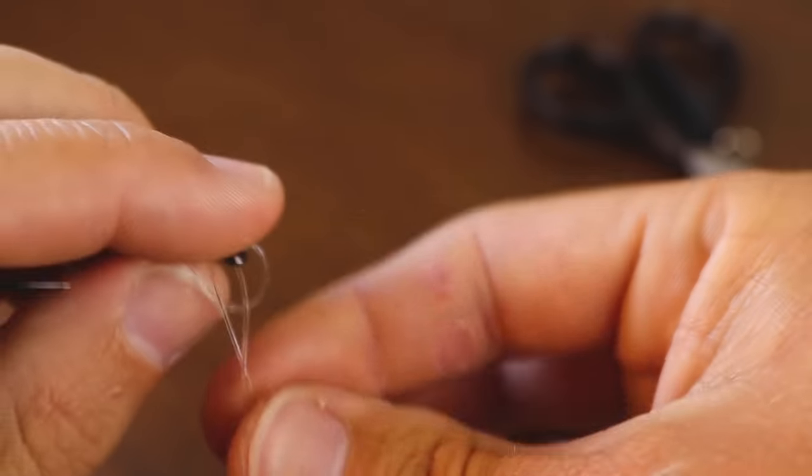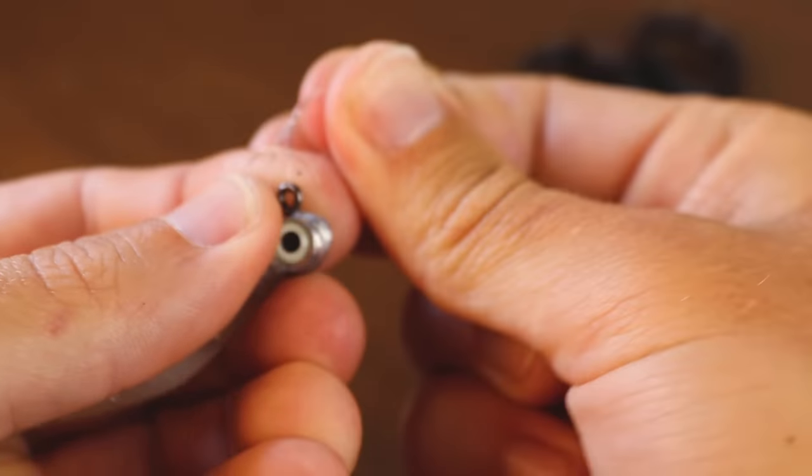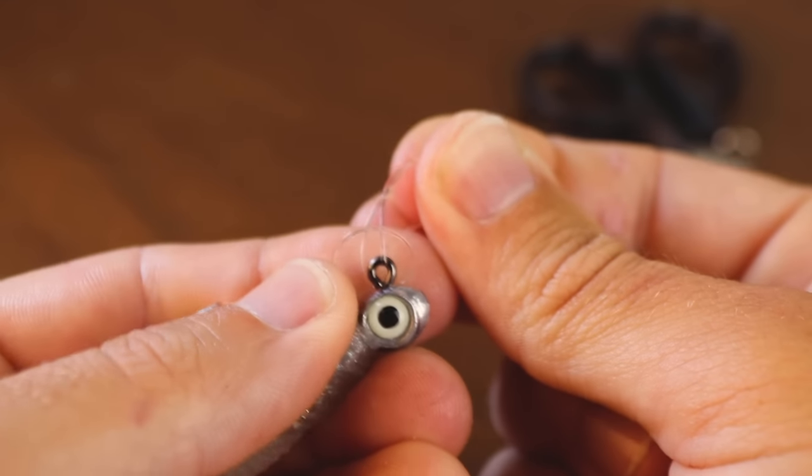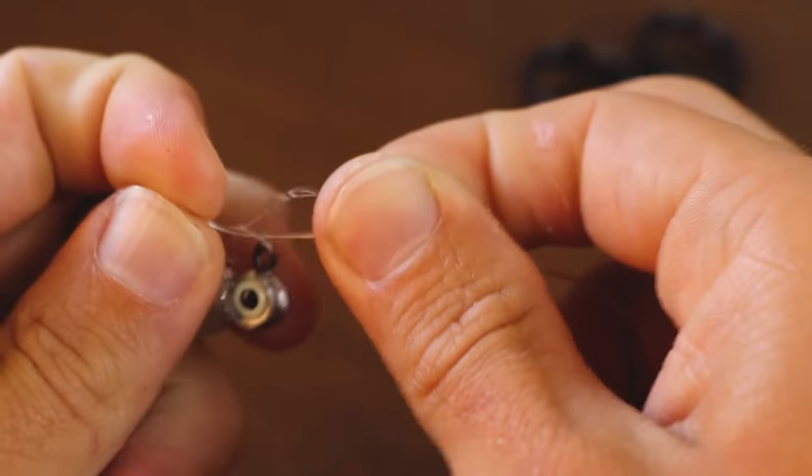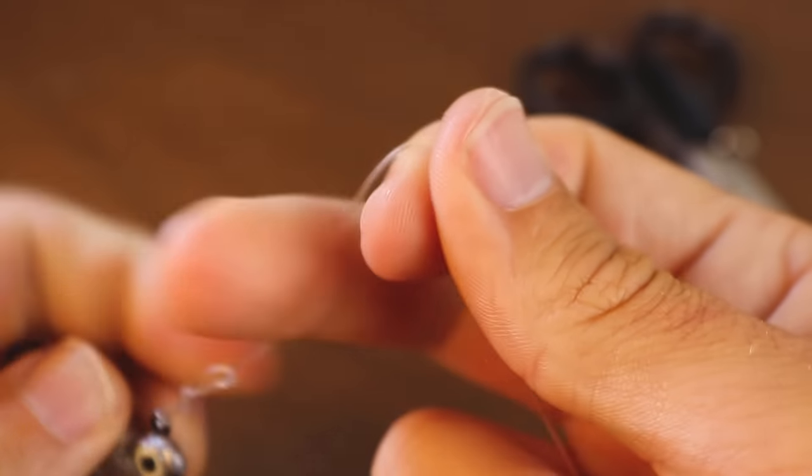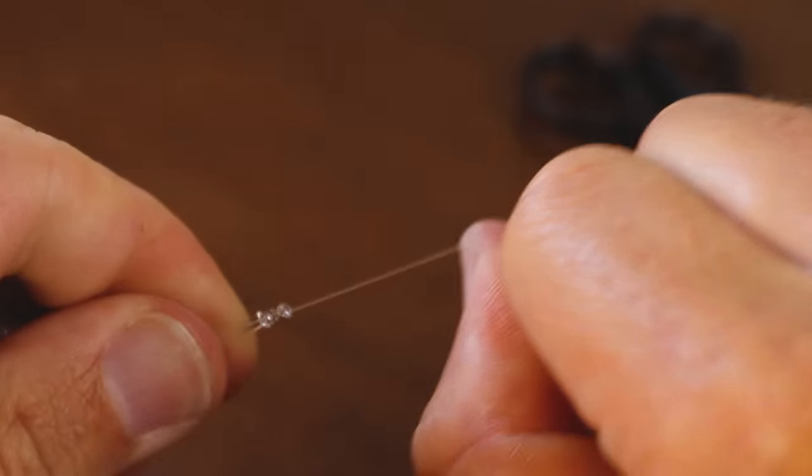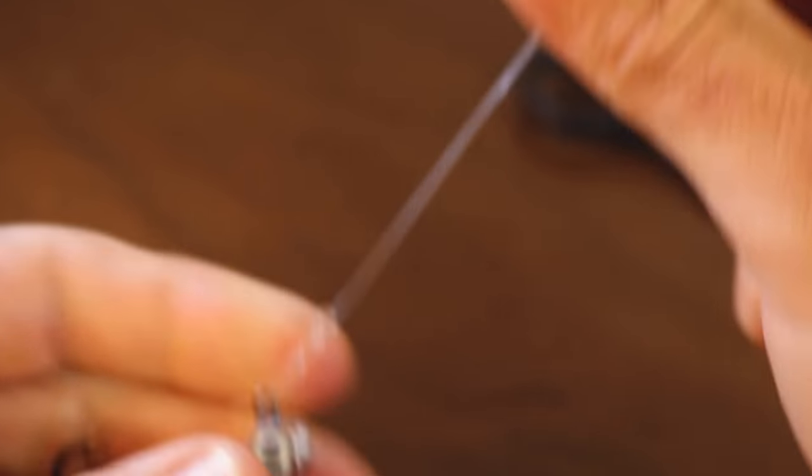Sometimes that knot wants to go down, but we're going to run it through this hole right here between the two of these loops. So it needs to go through right there, hold it here. And as you pull down, what you're going to end up with is a nice, tight, clean knot.